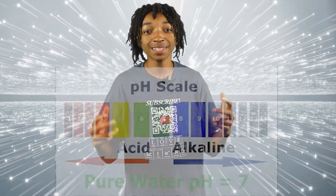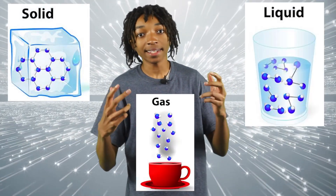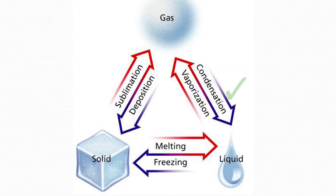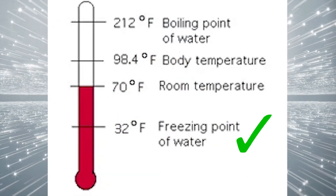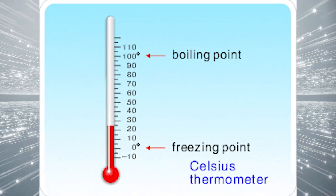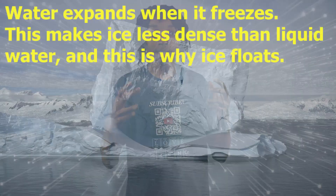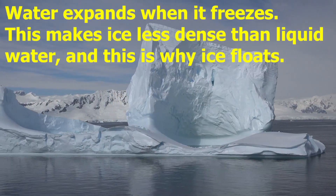Pure water has a natural pH of 7, which is neither acidic nor basic. Water is also unique in that it is the only natural substance found in all three states of matter: solid, liquid, and gas. Earth's water is constantly interacting and in movement through the processes of condensation, evaporation, freezing, and melting. Water freezes at 32°F and boils at 212°F at sea level, or 0°C and 100°C on the Celsius scale. Water is odd in that when it freezes, it expands and becomes less dense than liquid water, which is why ice floats.